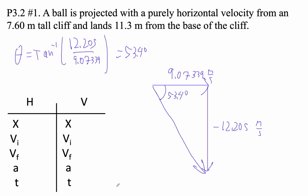And then to find the speed, we're going to have to find the length of this hypotenuse. Because that's our speed. So that's going to be 9.07339 squared plus 12.205 squared. Don't put the minus signs in here or here. Bad things will happen. Your calculator will explode. Maybe not.